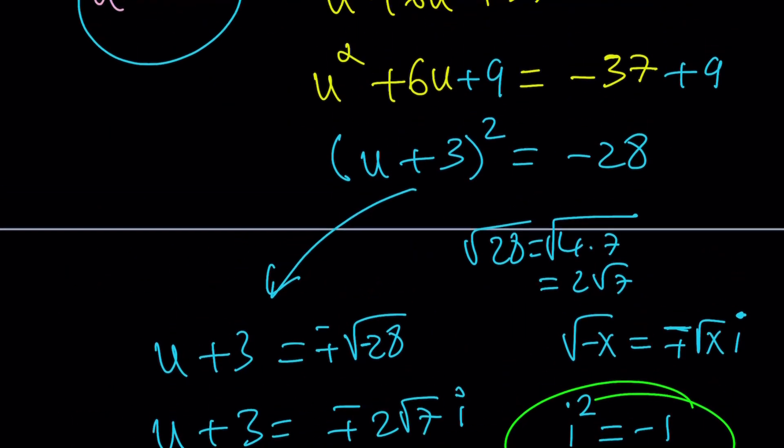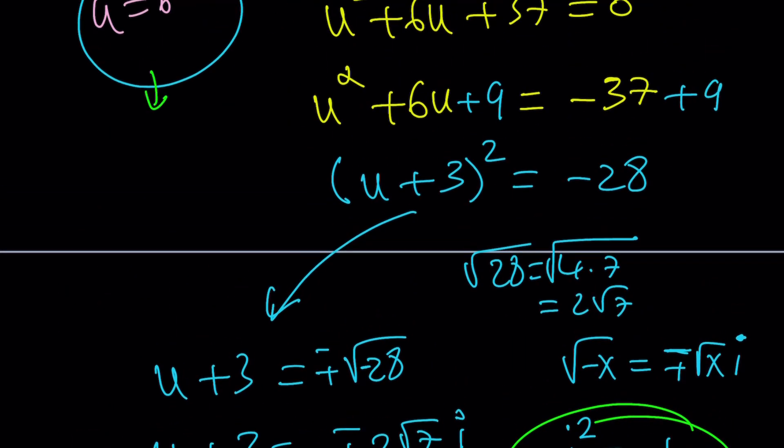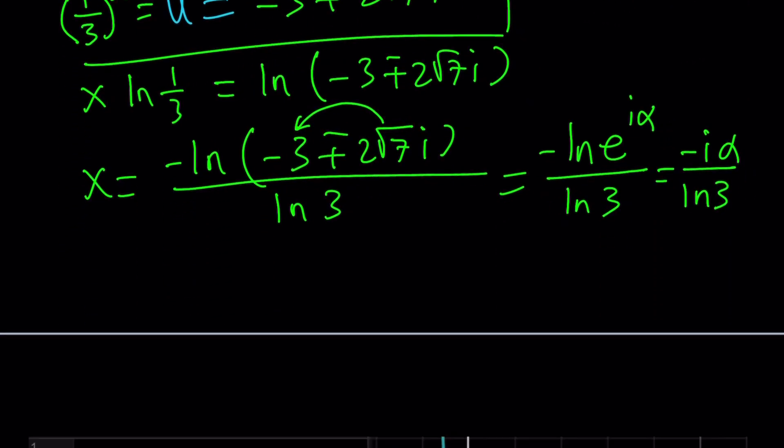Oh, by the way, from the other one, we get a real solution. And what is that going to look like? If one third to the power x is equal to six, ln both sides, you're going to get ln 6 with a minus sign divided by ln 3. So that's going to be our real solution. And let's take a look at the graph, and we'll finish up.